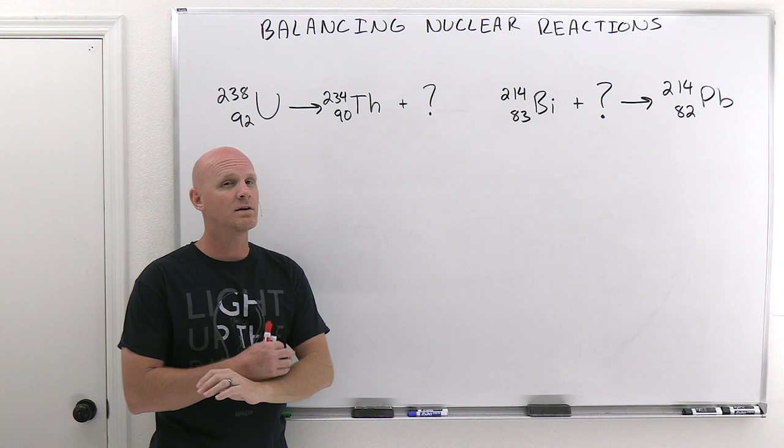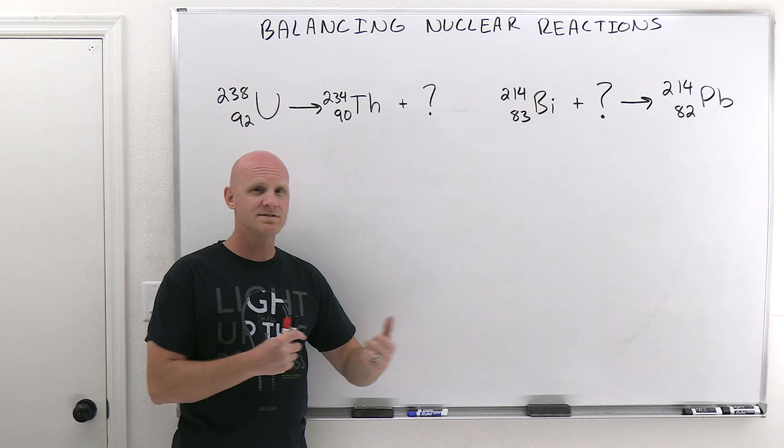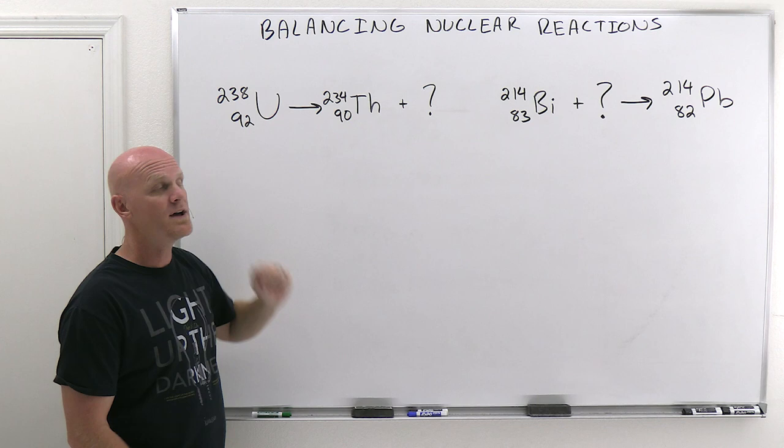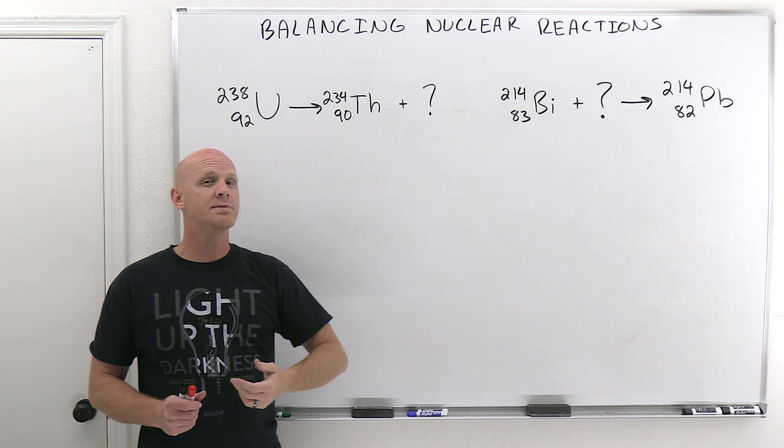So in balancing a nuclear reaction, you have to keep in mind that we're only dealing with the nuclei, we're not dealing with electrons whatsoever. We're really just following protons and neutrons and masses, although we're going to have some potential conversions between the two. But the big thing is this: you just need to make sure that the mass numbers are balanced on both sides of the reaction arrow, and that the atomic numbers are balanced on both sides of the reaction arrow.